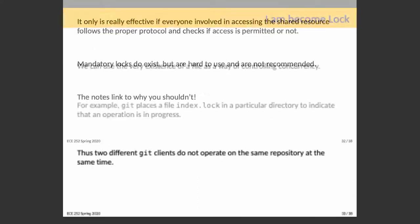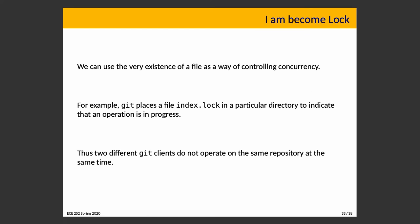There's one more thing about concurrency with file systems: using a file itself as a lock. That is, using the very existence of a file as a way of controlling concurrency. You may have seen this if you use git — git places a file called index.lock in a particular directory to indicate that an operation is in progress, so two concurrent operations on the same repository cannot both proceed.